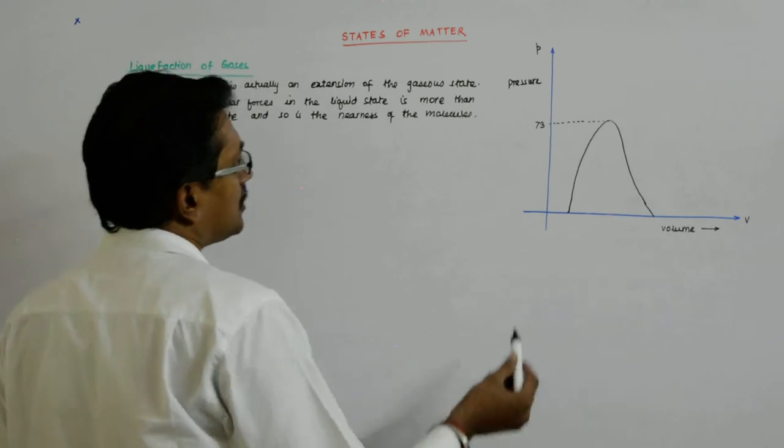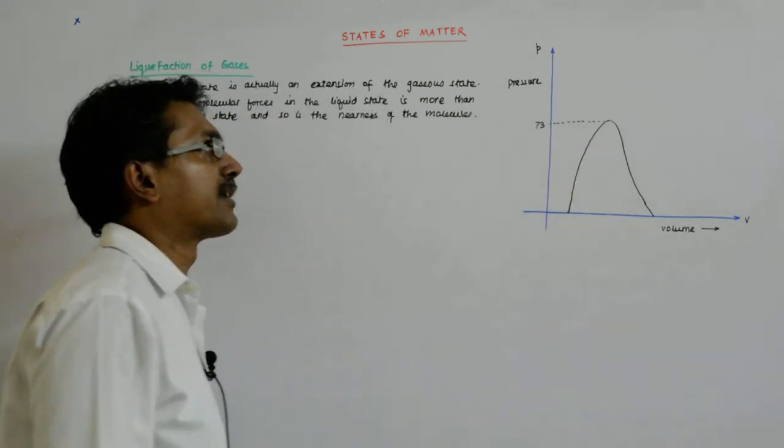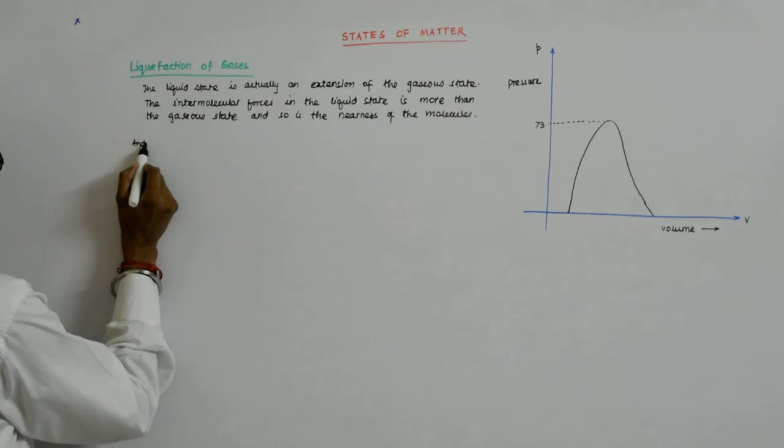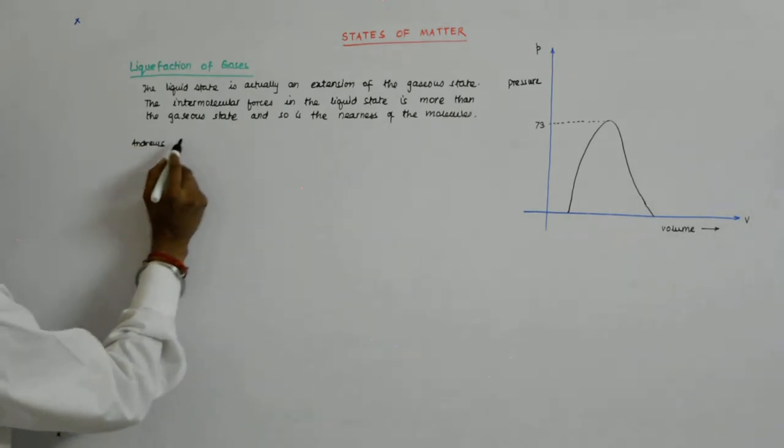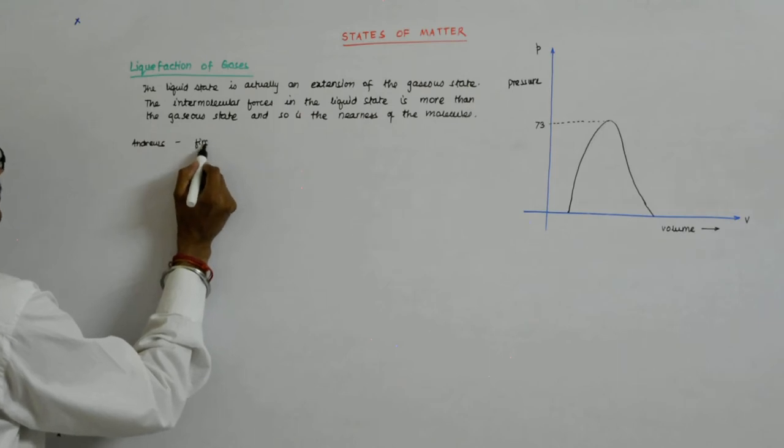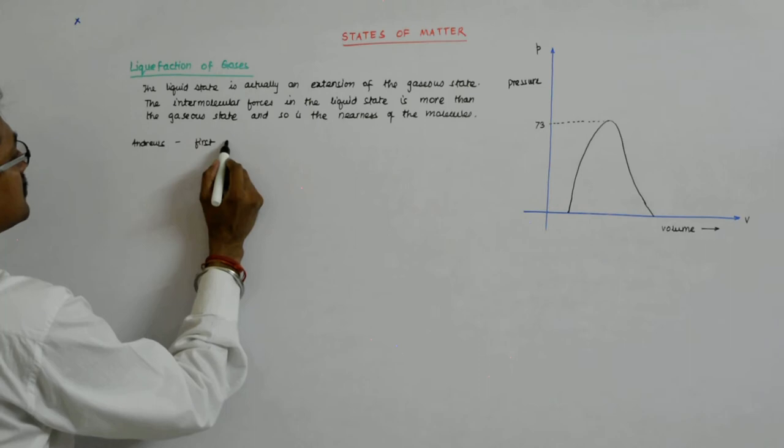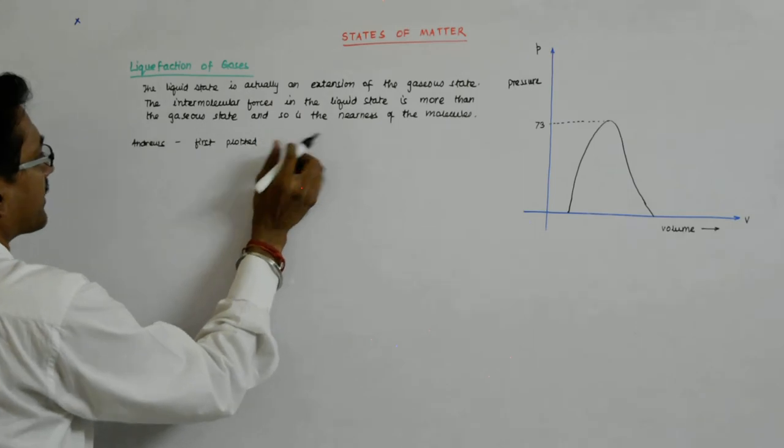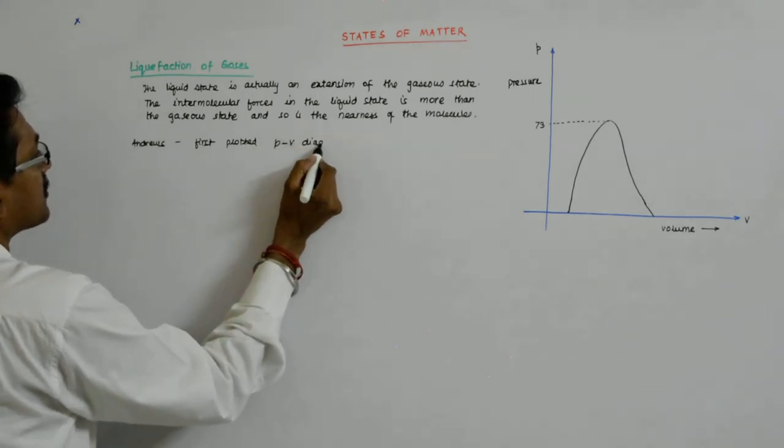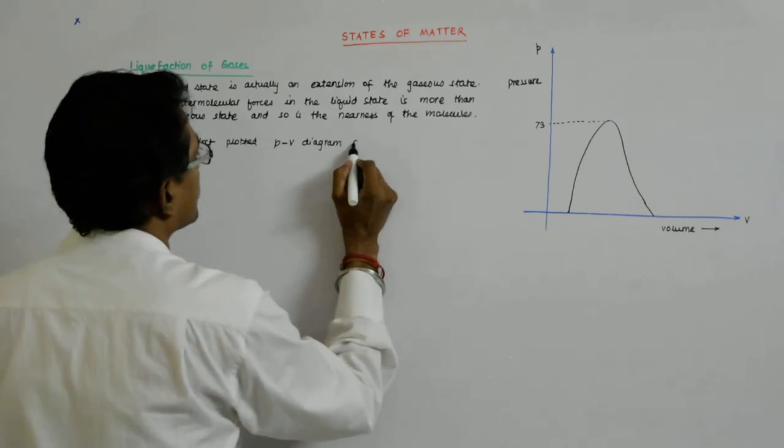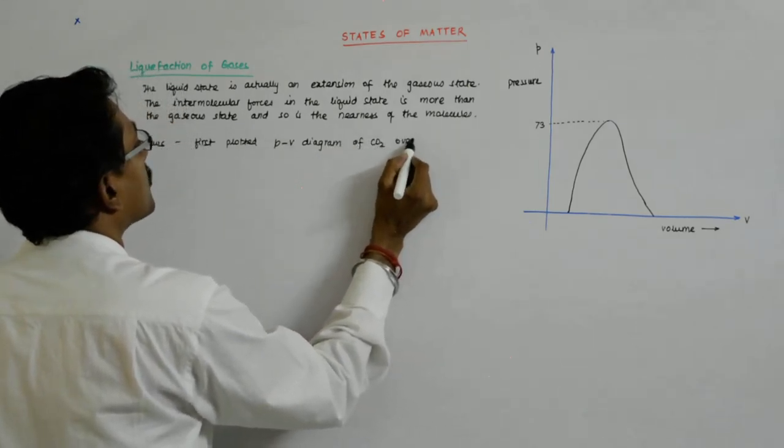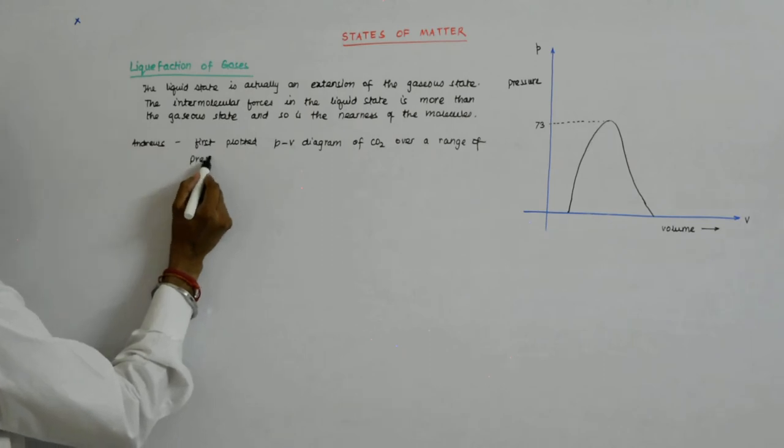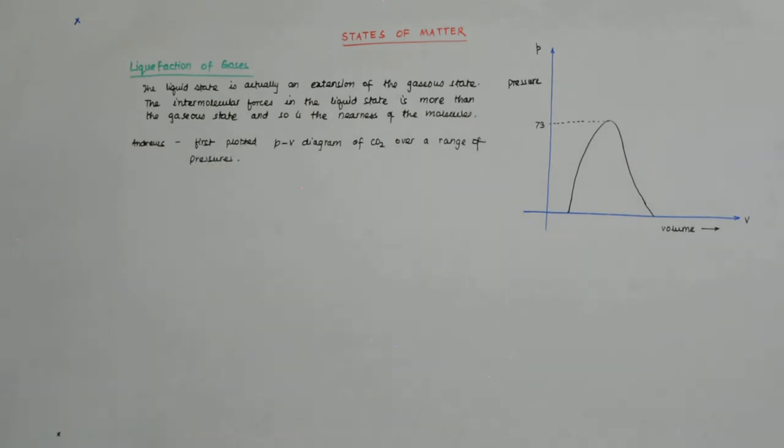I have drawn the PV diagram of gas. It was Andrews who first plotted the PV diagram of CO2 over a range of pressures.